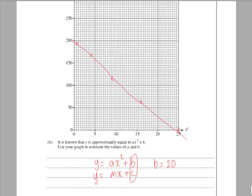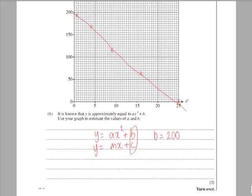So we can say that b looks like it would be equal to 200, and the a value would relate to the gradient.